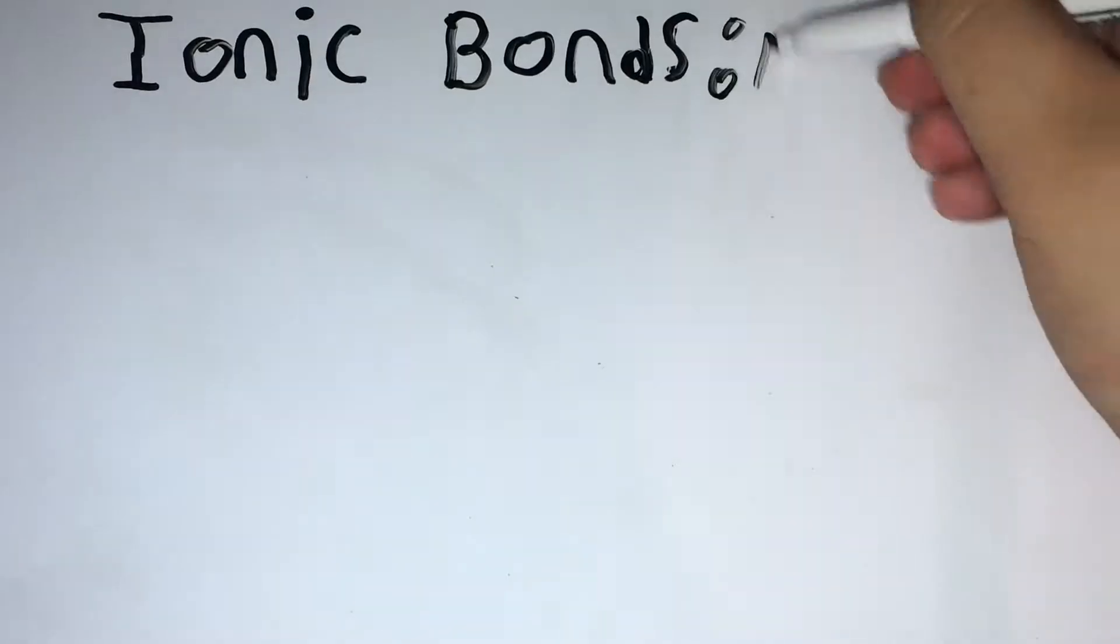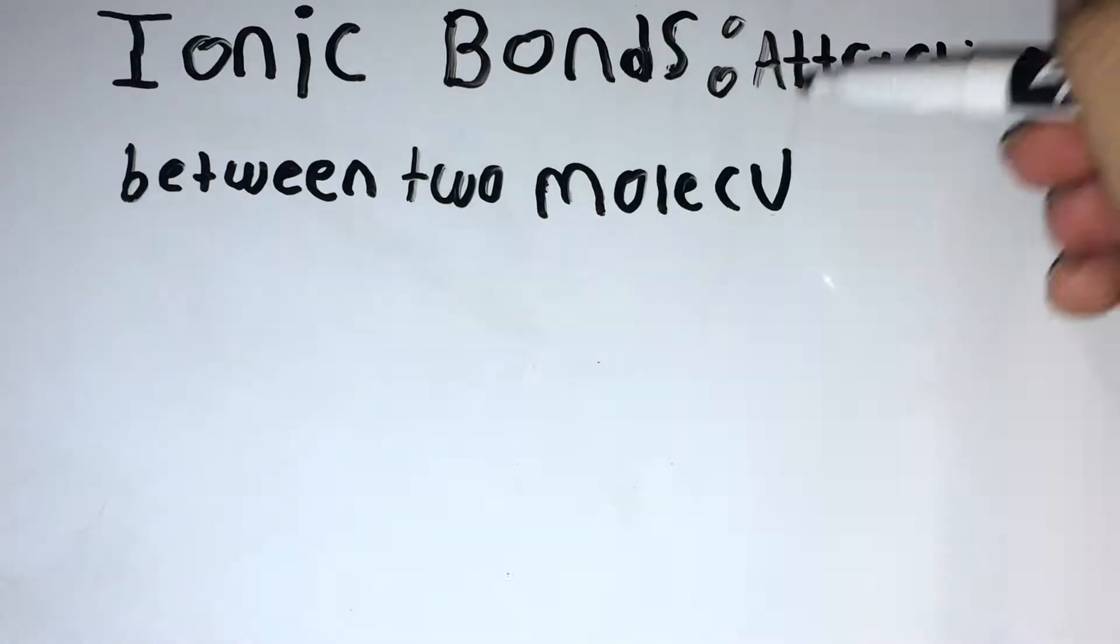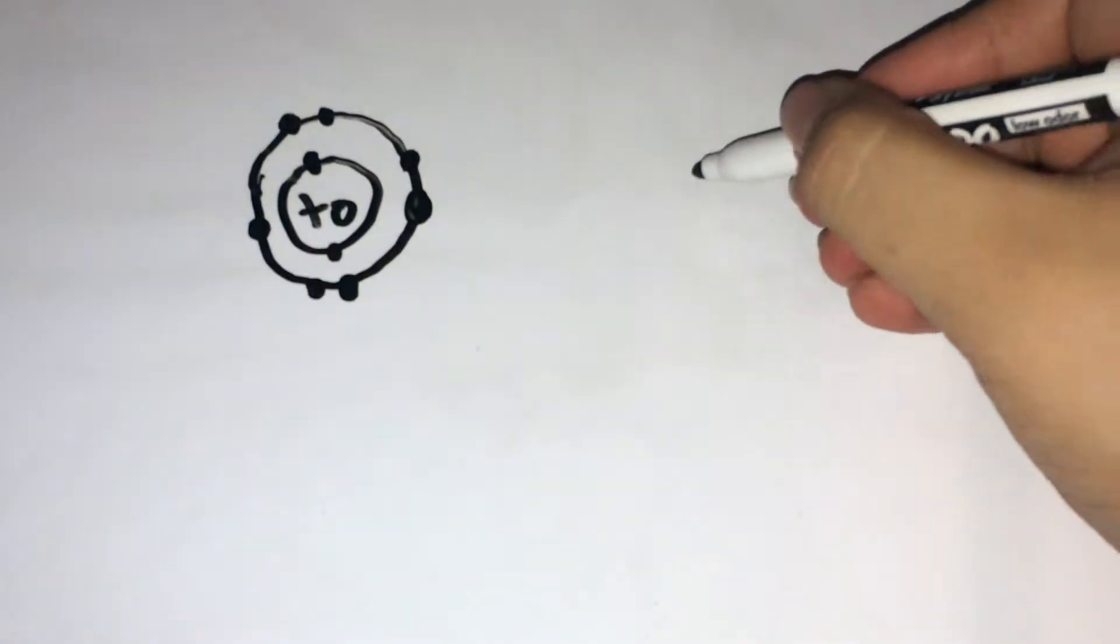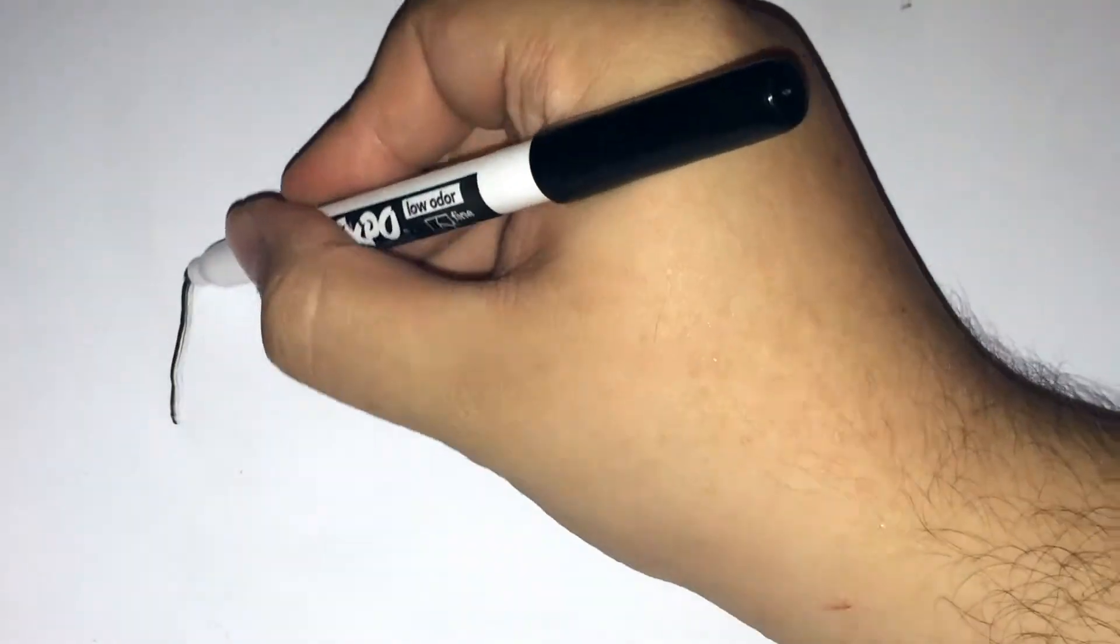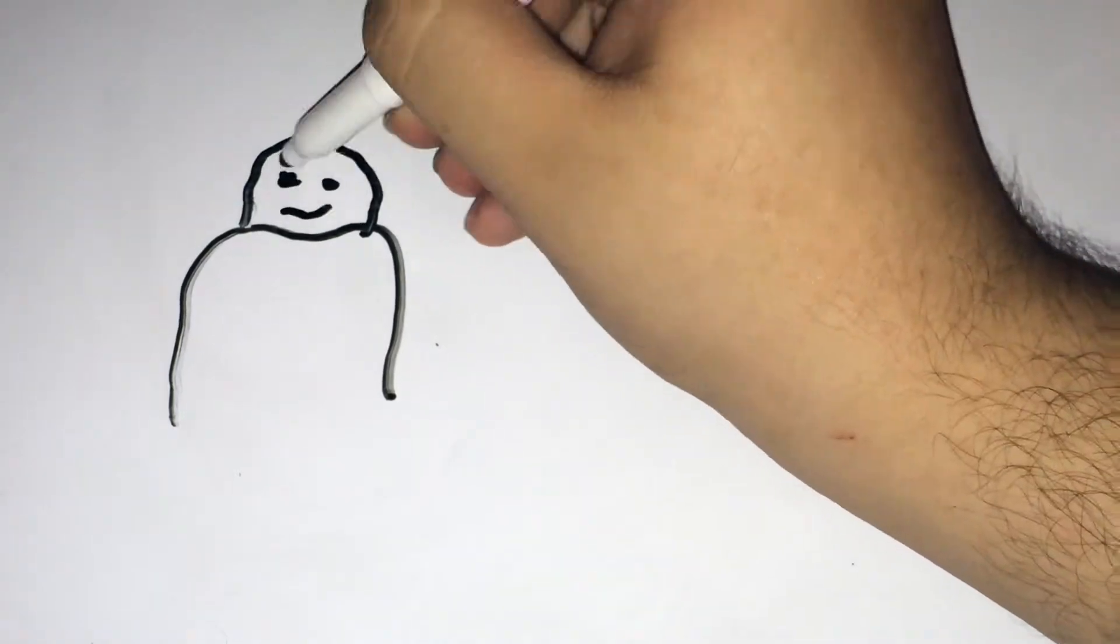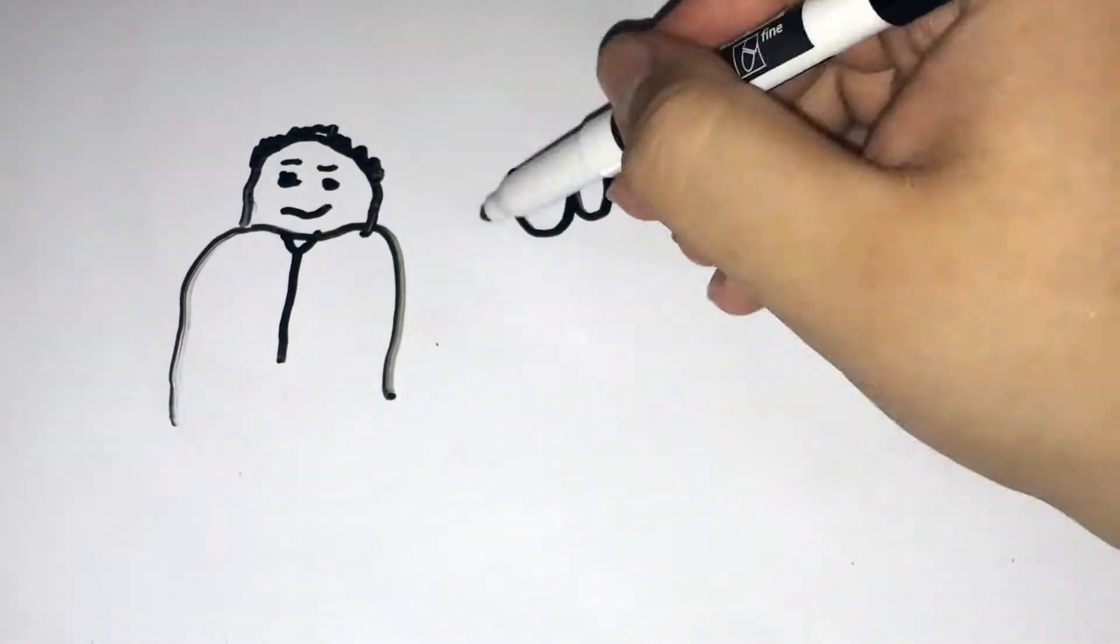Hi, today's topic: ionic bond. An ionic bond is a molecular attraction between two atoms. Specifically, an atom transfers one of its electrons to another atom, thus making the donor atom slightly more positive and the receiving atom slightly negative.